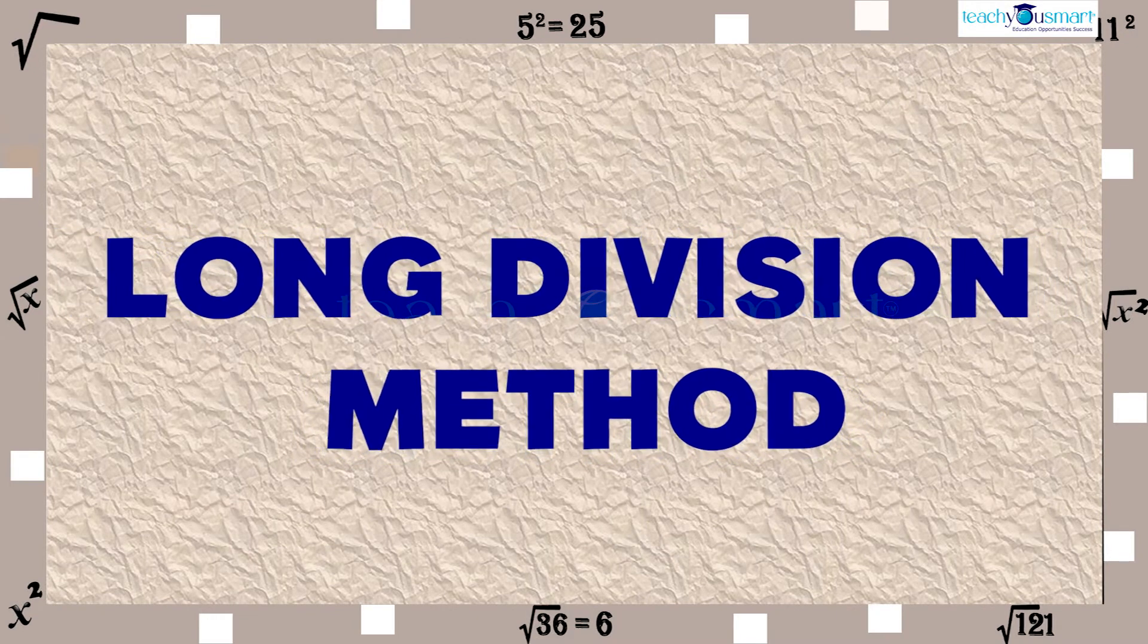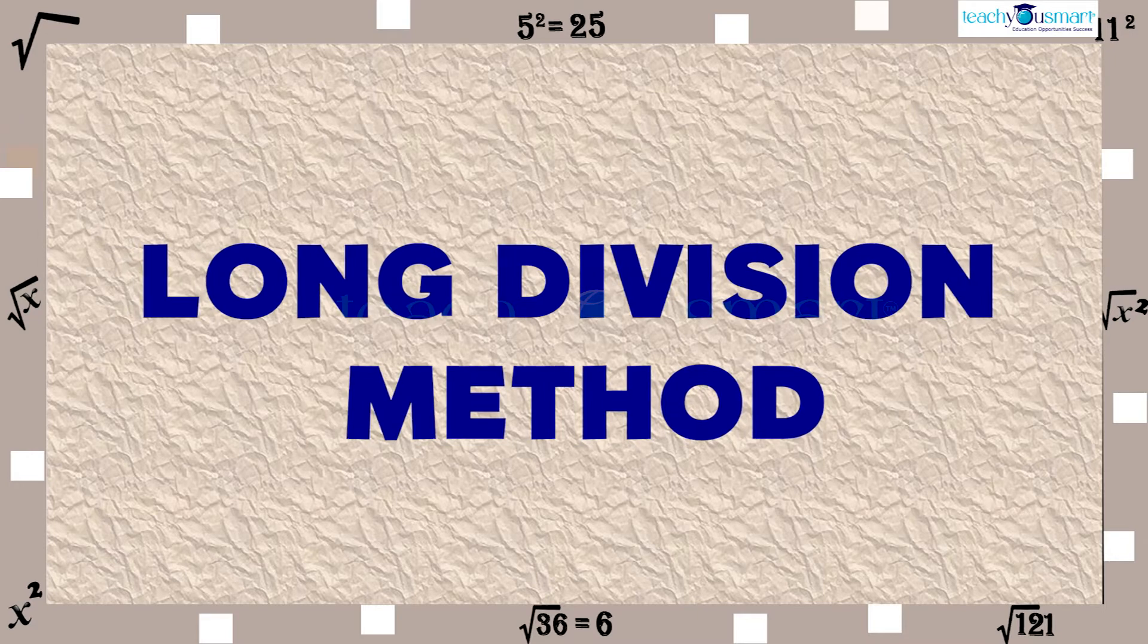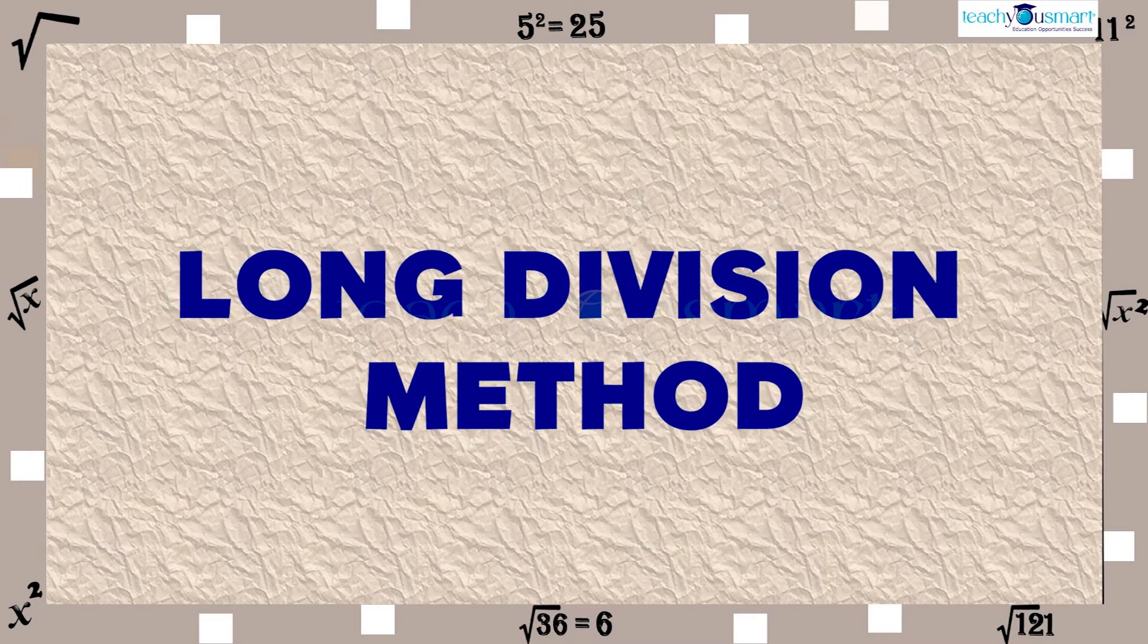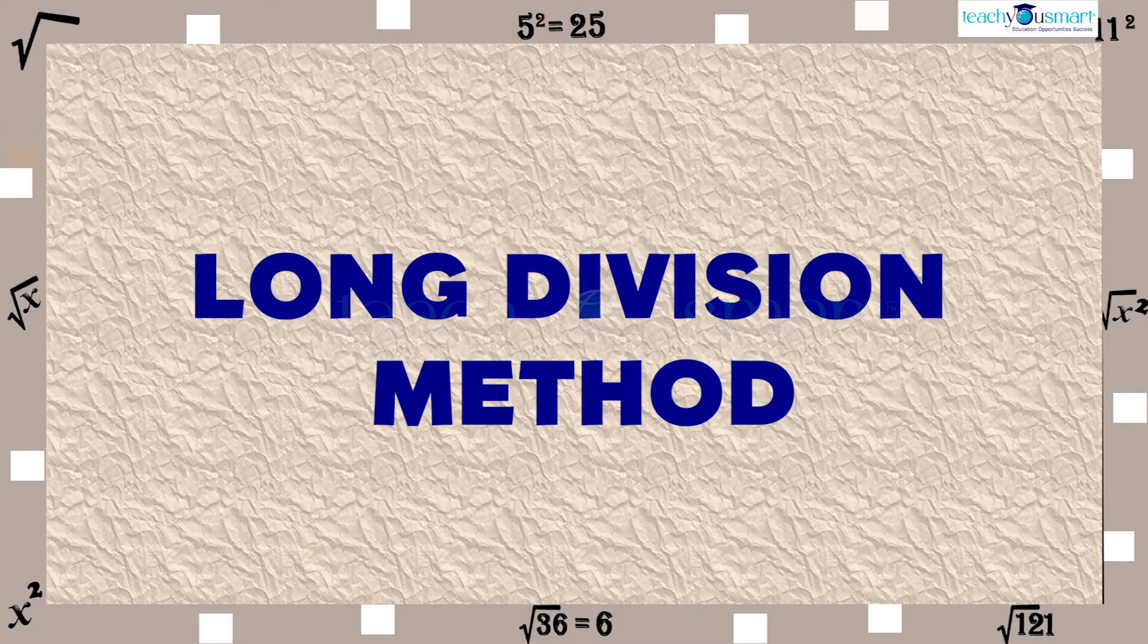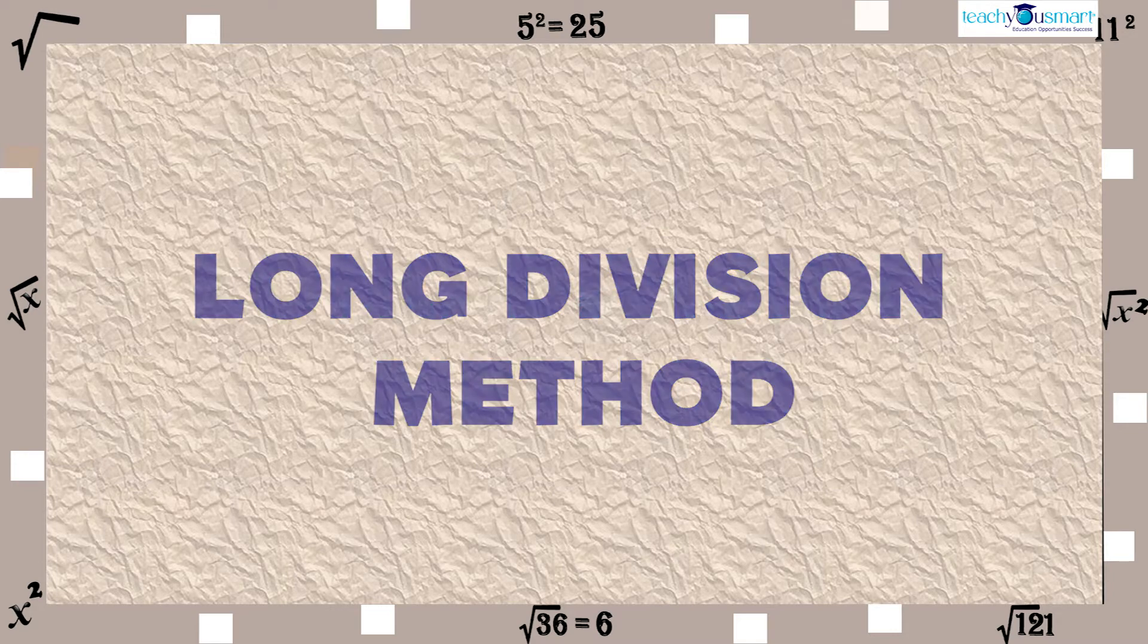When the numbers are large, even the method of finding square root by prime factorization becomes lengthy and difficult. To overcome this problem, we use the long division method. This method includes some steps.